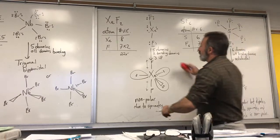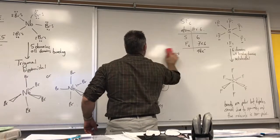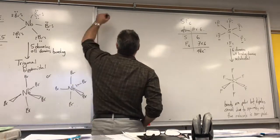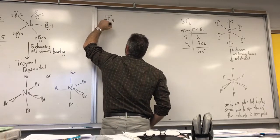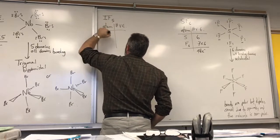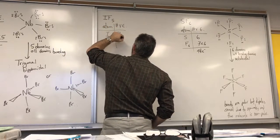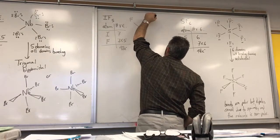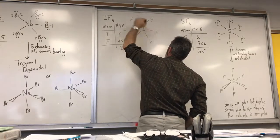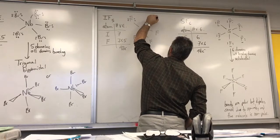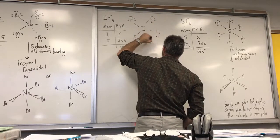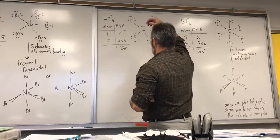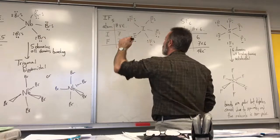Let's erase and make room. The next example is iodine pentafluoride, IF₅. Iodine has seven valence electrons, so does fluorine, and there are five fluorines, so 6 × 7 = 42 electrons to account for. Drawing the central iodine with five satellite fluorine atoms and dispersing six electrons on each fluorine: five times six gives 30, plus 10 for the bonds gives 40, with two electrons remaining, so we put them on the central iodine.